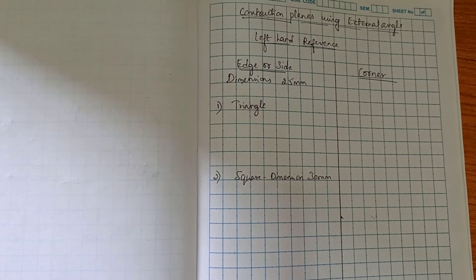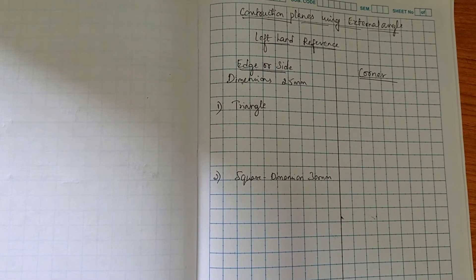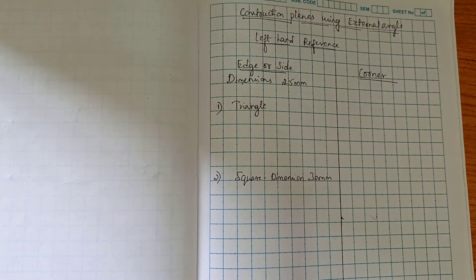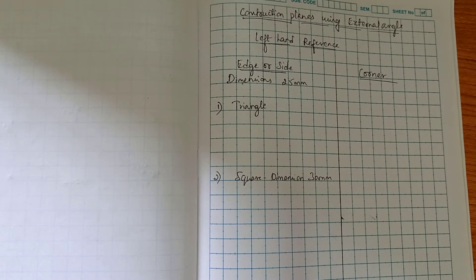Today we are going to learn about construction of planes using external angle on the left-hand side reference. In this construction we are constructing with respect to the left-hand side, with respect to the edge or with respect to the corner. We are clearly defining the first position of the construction, happening with respect to external angle and left-hand reference, defined with respect to edge or corner.